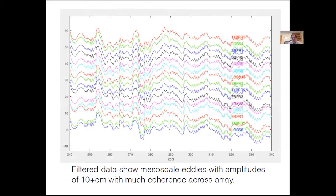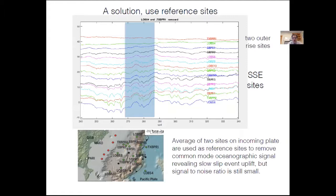To get around this problem, we use reference sites. Two sites were on the incoming plate and should not be associated with the slow slip event. We averaged them and subtracted them from the rest of the sites, and at that point you can see the uplift associated with the slow slip event in the data. The New Zealand events are quite large — that's what makes it possible to see them despite the large oceanographic signals. We've also looked at using predictions from oceanographic models driven by local wind, and adding current meters near the seafloor to try to remove these oceanographic signals.